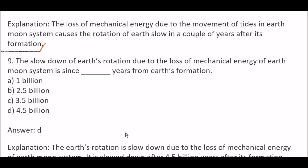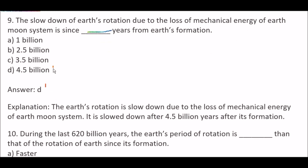Next question: The slowdown of Earth's rotation due to the loss of mechanical energy of the Earth-Moon system is since blank years from Earth's formation — Option A, 1 billion; Option B, 2.5 billion; Option C, 3.5 billion; Option D, 4.5 billion. Right answer is Option D, 4.5 billion. Earth's rotation slowed down after 4.5 billion years after its formation.